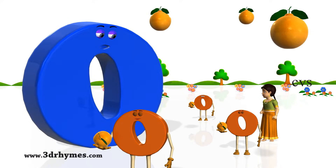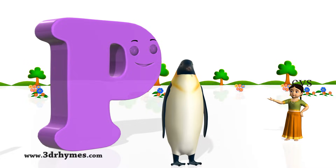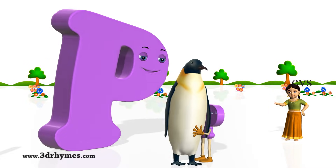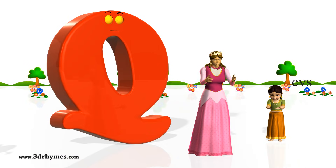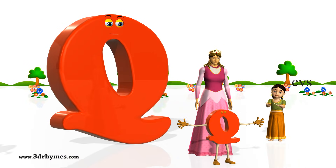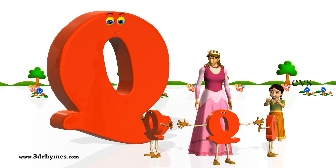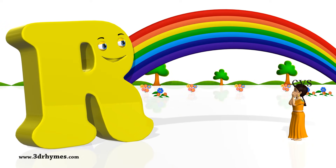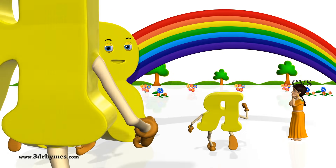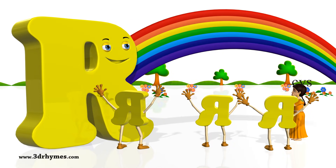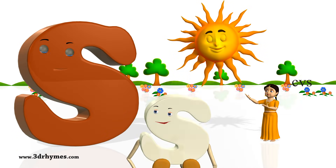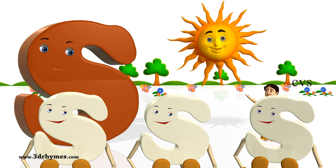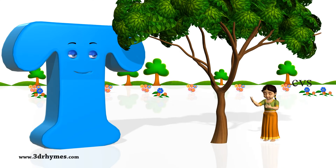P for penguin, Q for queen, R for rainbow, S for sun, T for tree.